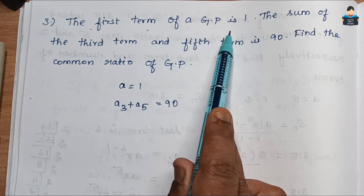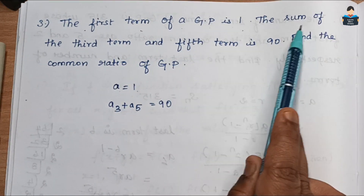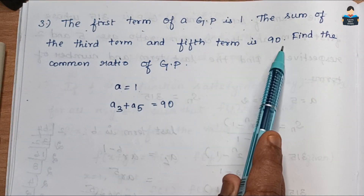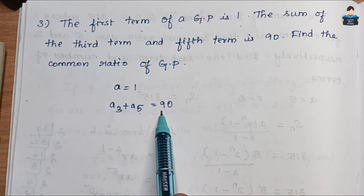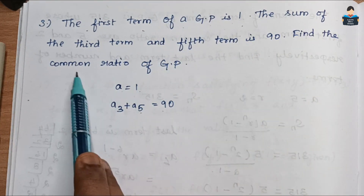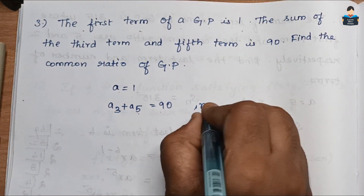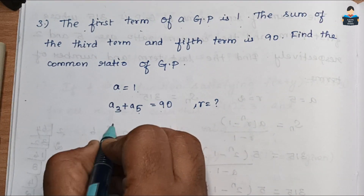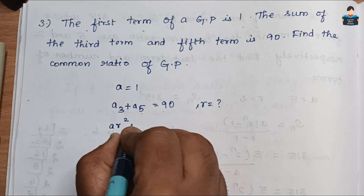The first term of a GP is 1, so a = 1. The sum of the third term and the fifth term is 90, so a3 + a5 = 90. We need to find the common ratio. Now, a3 = ar² and a5 = ar⁴.